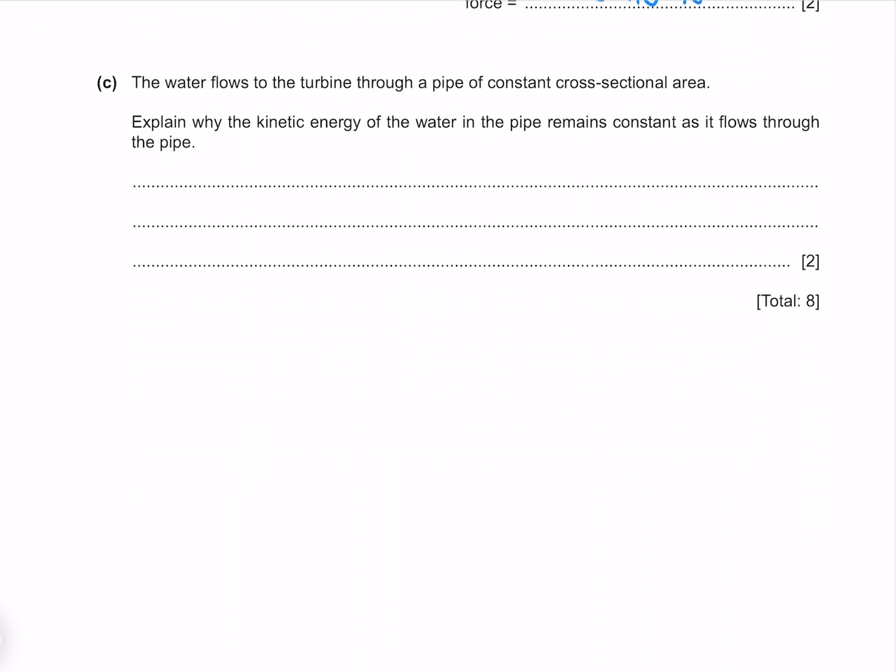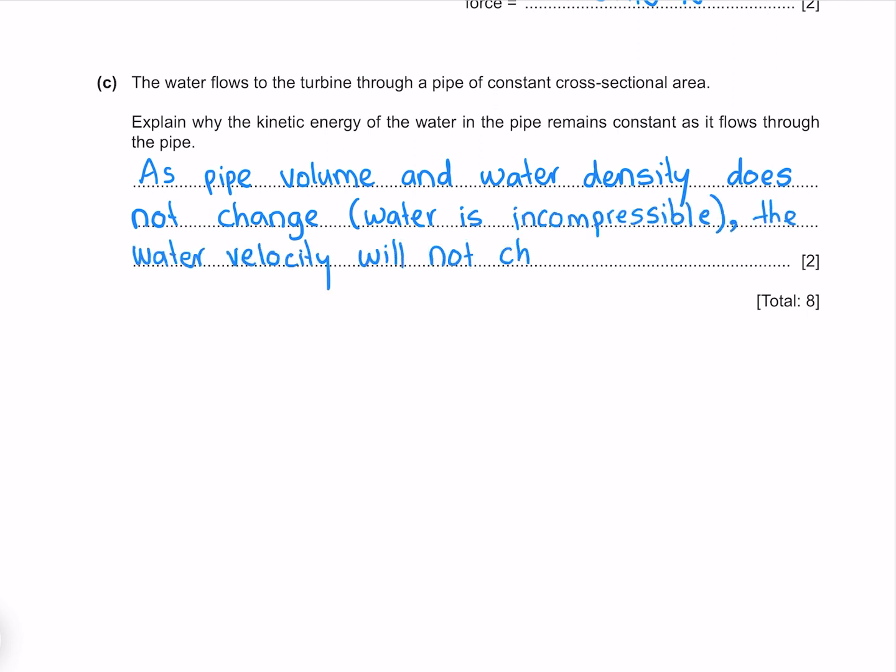The water flows to the turbine through a pipe of constant cross-sectional area. Explain why the kinetic energy of the water in the pipe remains constant as it flows through the pipe. As pipe volume and water density does not change, water is incompressible. The water velocity will not change and thus neither will the kinetic energy.